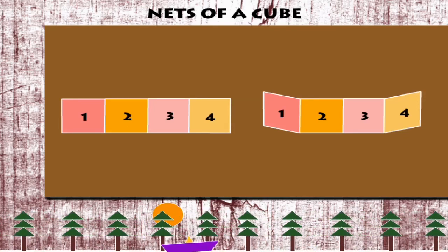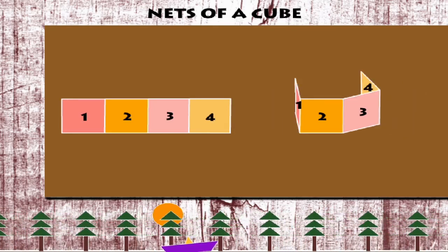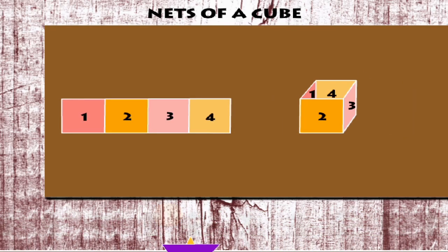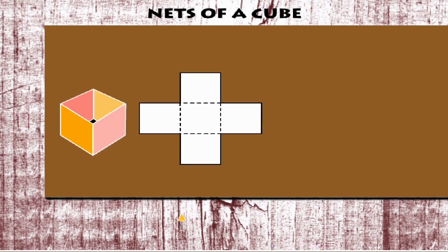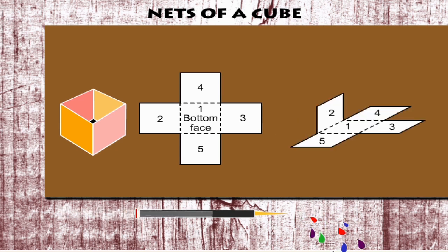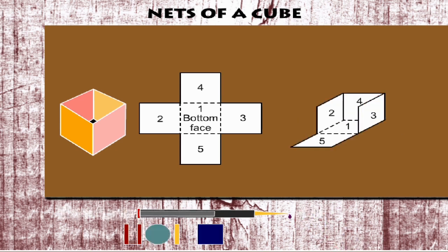Now, let's see how you get the cube frame by folding these sides. Here it is. If we add the bottom face and number the sides, they will be 1, 2, 3, 4, and 5.